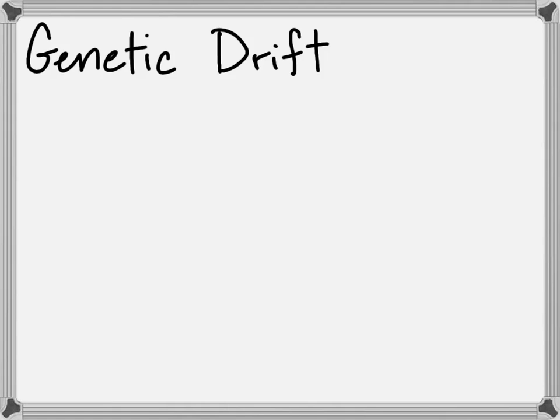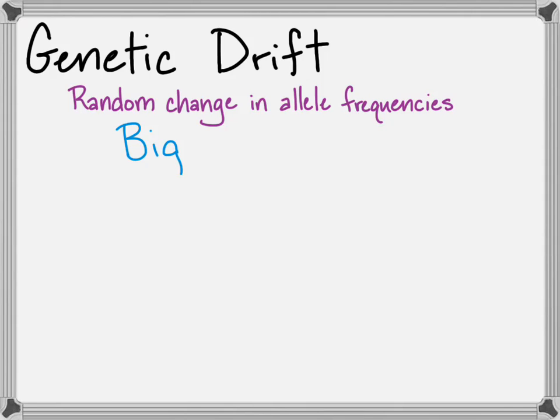Genetic drift is a random change in allele frequencies. This can happen all the time, but it's most likely to happen when a population goes from very big to very small.